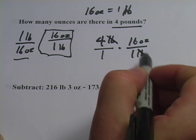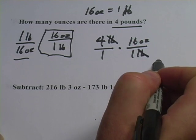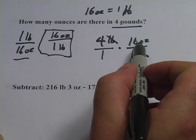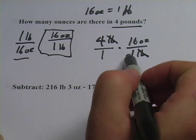So those units cancel out and what you're left with after you do the math is just ounces. Now, I simply multiply these fractions, 4 times 16 on the top, 1 times 1 on the bottom.